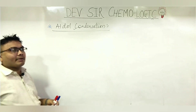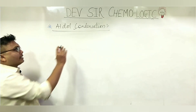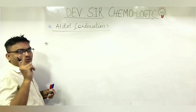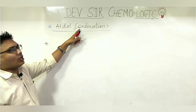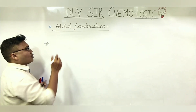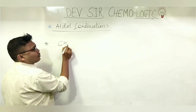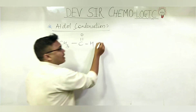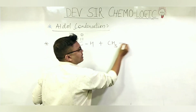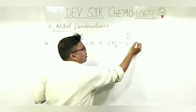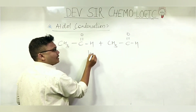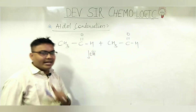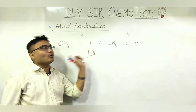Let's look at this example reaction: CH₃-CHO plus CH₃-CHO. In which medium does this occur? Basic medium. Sodium hydroxide. So this is an aldol condensation in basic medium.